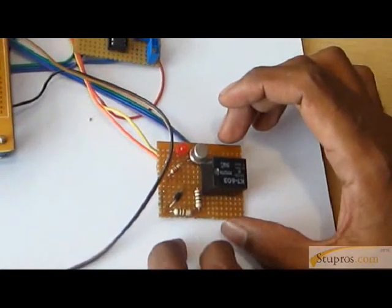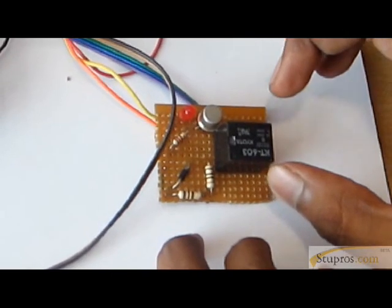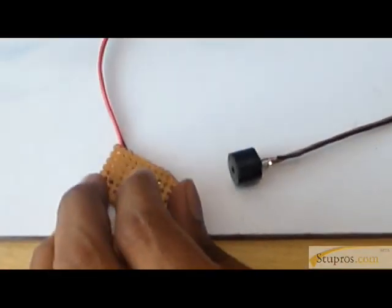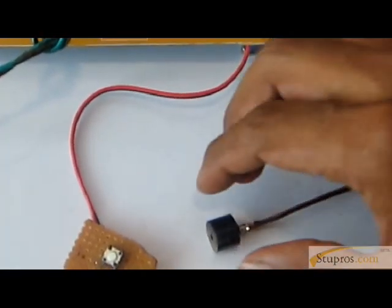These are the relays, which are electromagnetic switches. They control the robot's movement through motor control. The buzzer provides an alarm indication when any crack is detected.